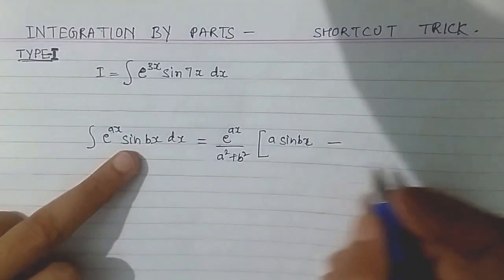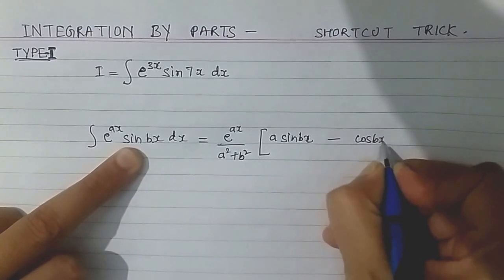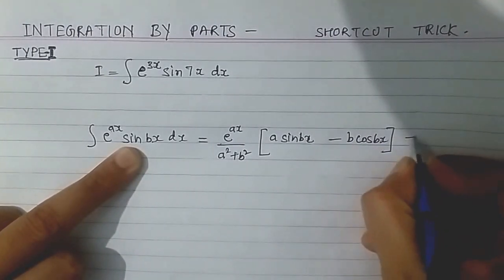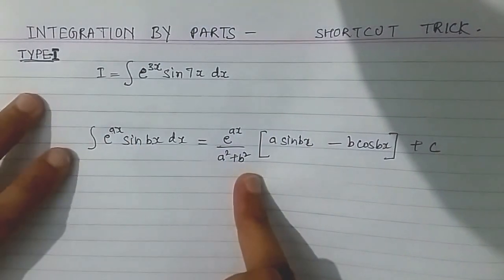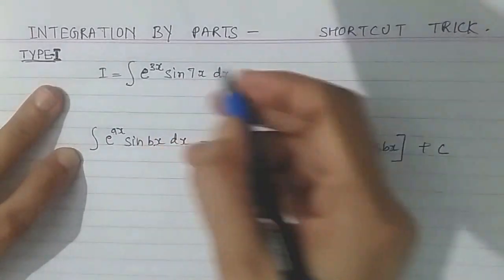Minus differentiation of sine bx. Differentiation of sine bx is cos bx into b, so b cos bx plus c. That's all, this is my shortcut formula for doing such questions.